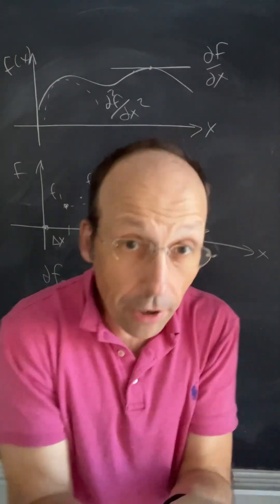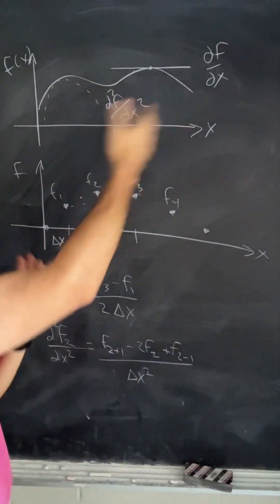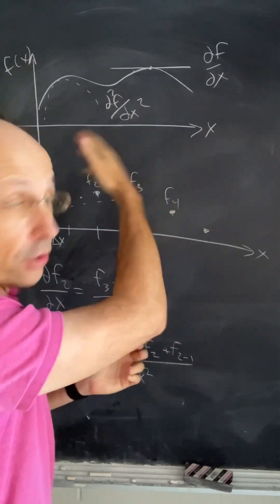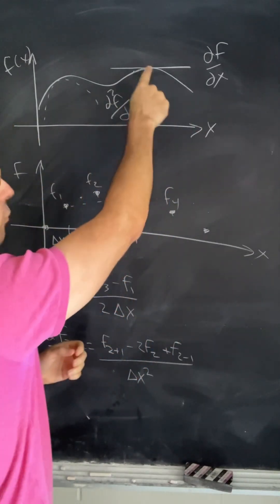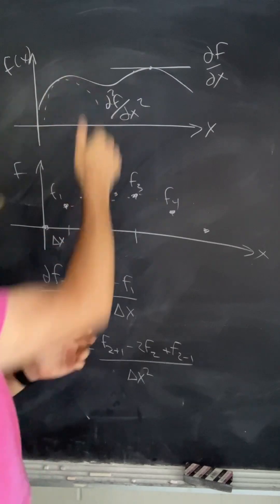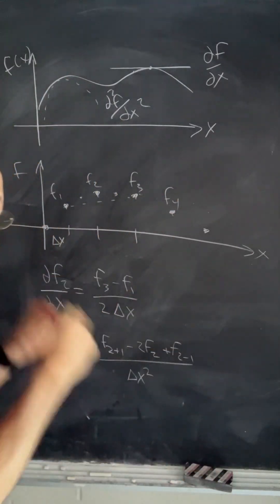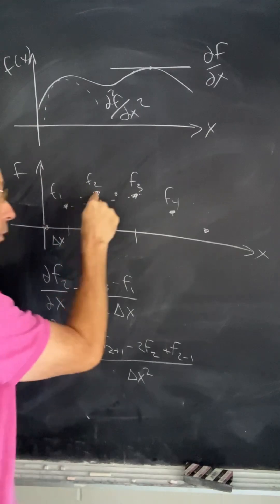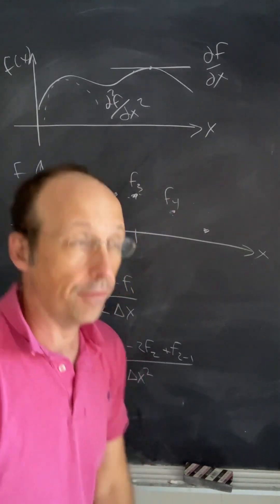How do you deal with numerical derivatives? Suppose I have some function f of x. I can take the derivative — it's the slope. I can take the second derivative — it's the curvature. We can do all that stuff. But what if I have numerical data, just data points for all those things? How do I take the derivatives?